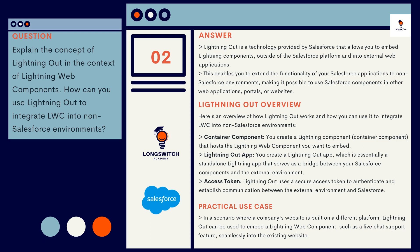Component one: the container component — you create a Lightning component that hosts the Lightning Web Component you want to embed. Component two: the Lightning Out app — a standalone Lightning app that serves as a bridge between your Salesforce components and the external environment. Component three: the access token — Lightning Out uses a secure access token to authenticate and establish communication between the external environment and Salesforce.